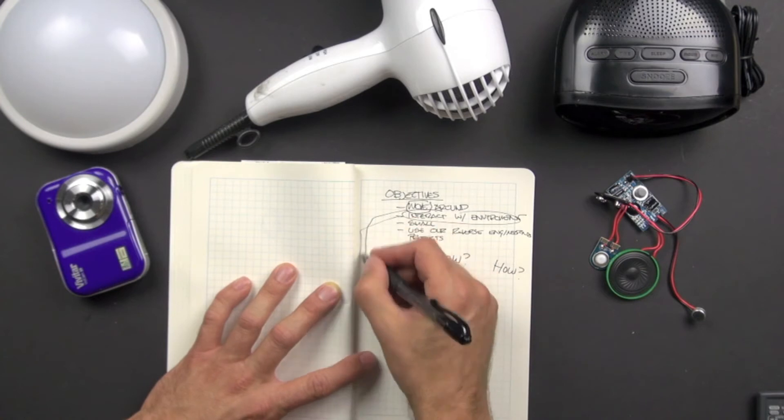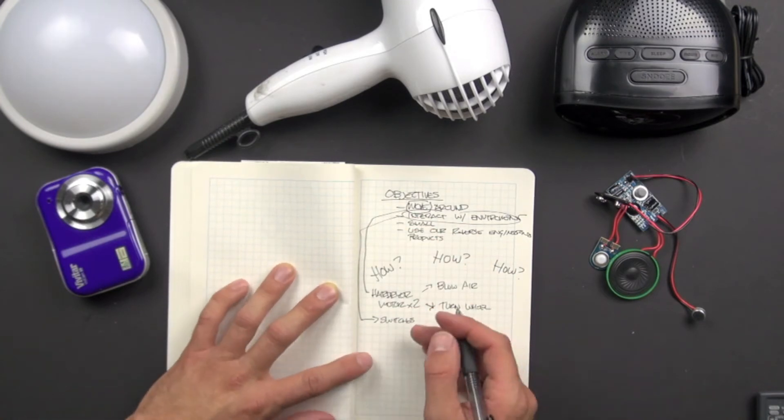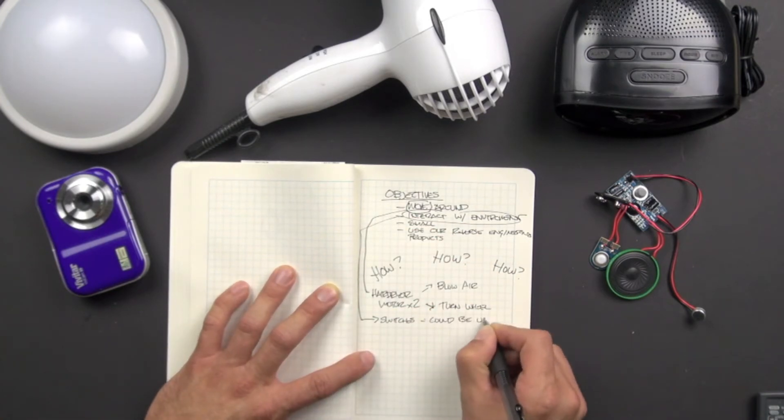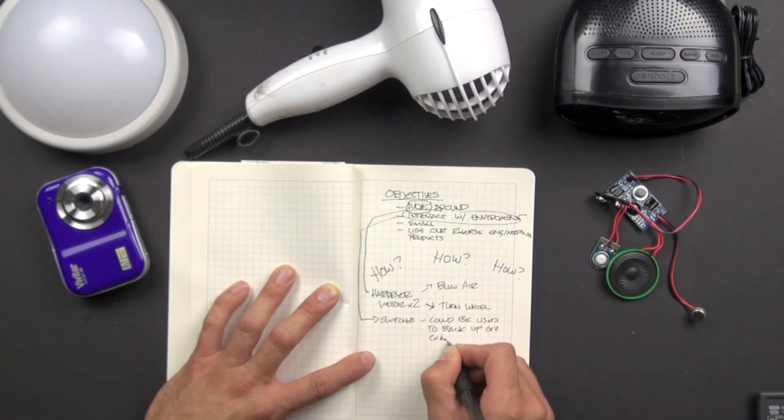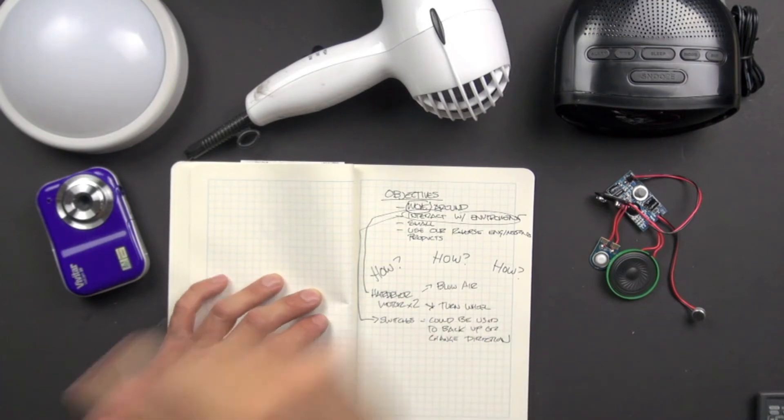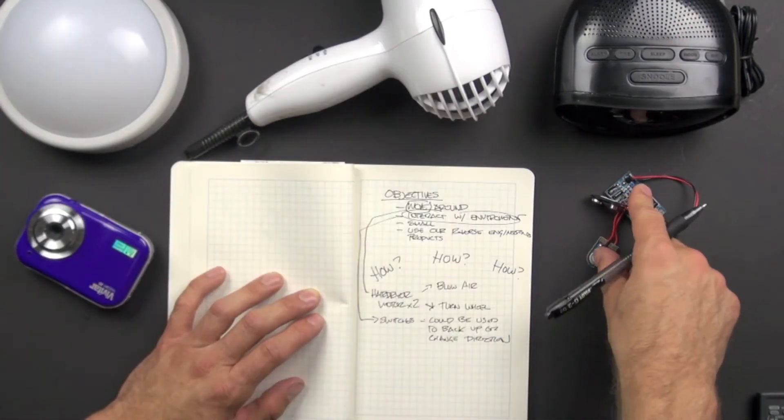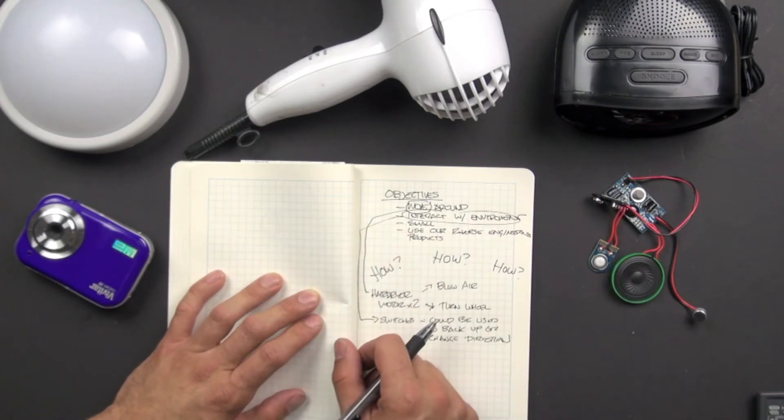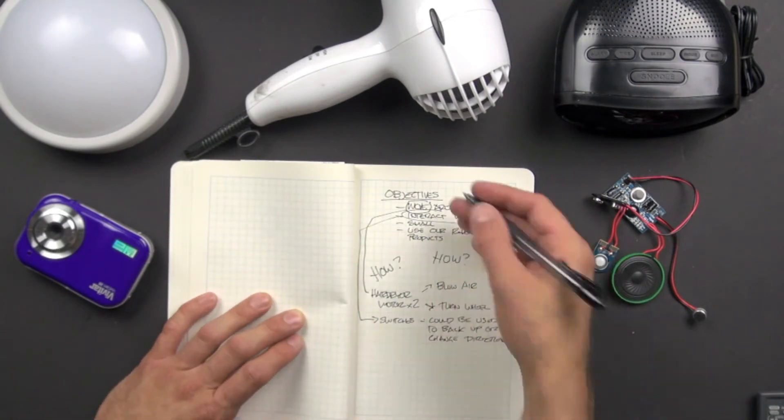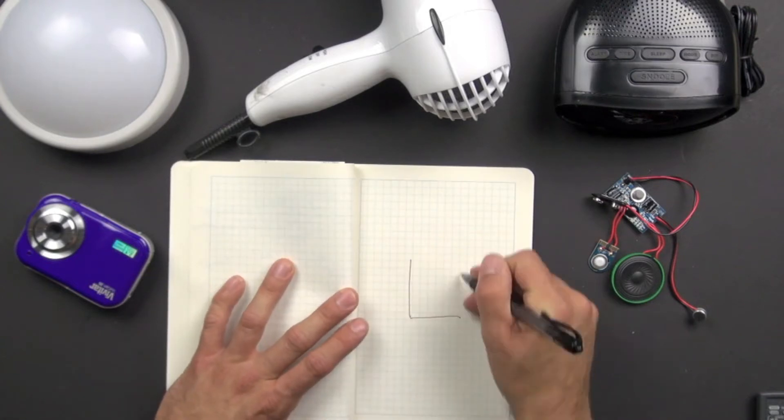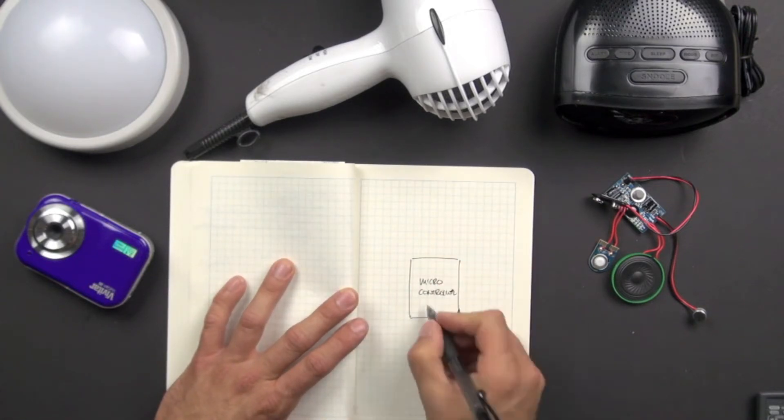And to interact with the environment, we need some sort of switch or sensor. So we maybe could use the switches from the alarm clock so that if it hits a wall or something, it can back up and turn around, and we can use our camera and sound card to record images and sound. But how do we control all of these things? We're going to need a microcontroller.